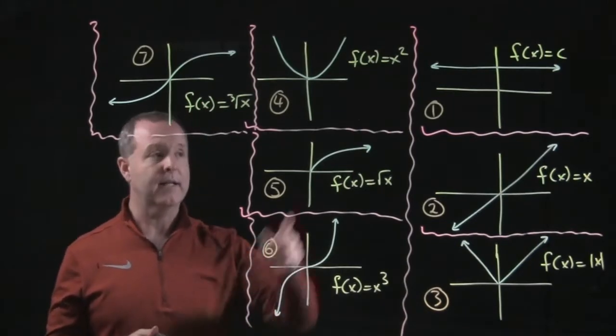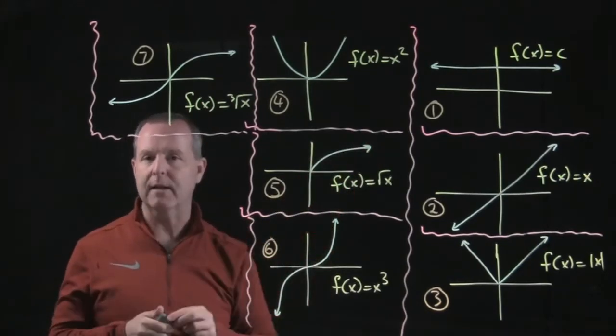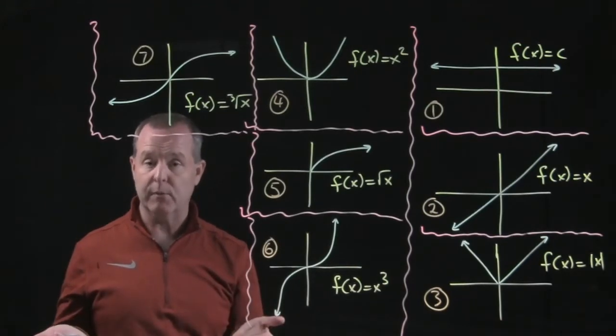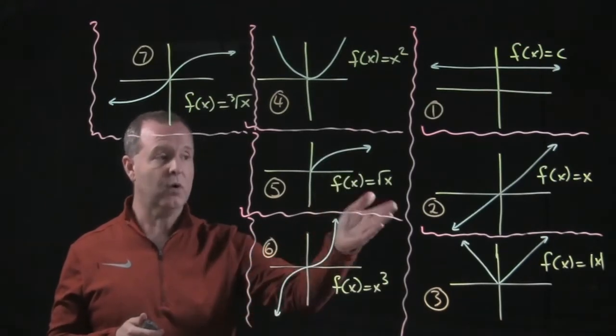Some of our squigglies, like number one, it's a straight line. We've become comfortable with those in the past. One and two are both straight.